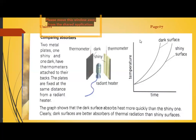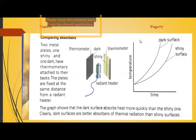There is quite a large difference between dark and shiny surfaces. Dark surfaces absorb heat quickly and radiate it quickly, while shiny surfaces take much more time to absorb the same amount of heat and radiate it more slowly compared to dark surfaces.